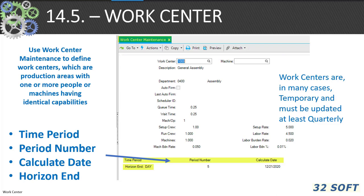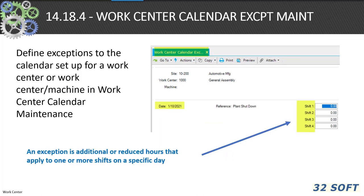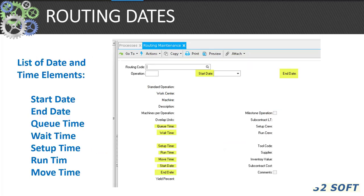Work centers in many cases are temporary and should be updated at least quarterly to ensure timely and consistent date management. The 14.18.1 work center calendar maintenance allows you to define a specific work center or machine calendar for shift, hours, start time, productivity, and pattern. And 14.18.4 allows you to define exceptions for those particular processes, even by shift.